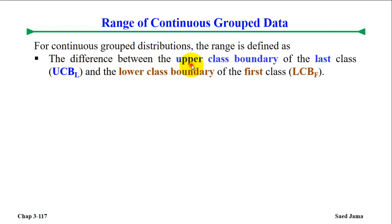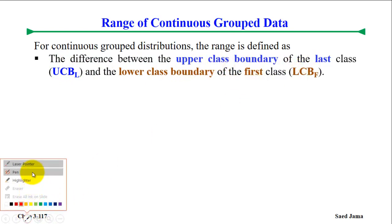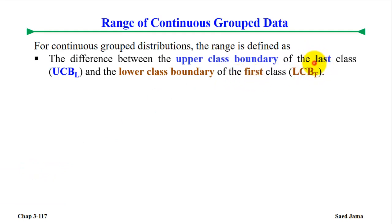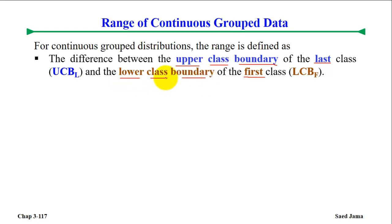We are going to look at the difference between the class boundary of the last class and the first class. For continuous grouped distribution, the range is defined as the difference between the upper class boundary of the last class and the lower class boundary of the first class. This is the working definition.